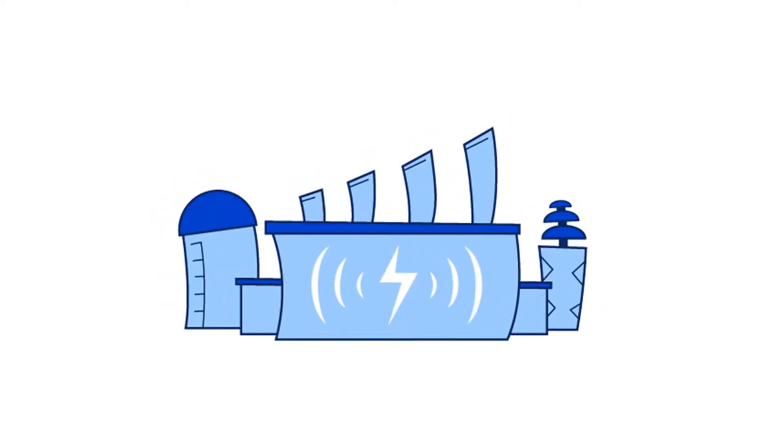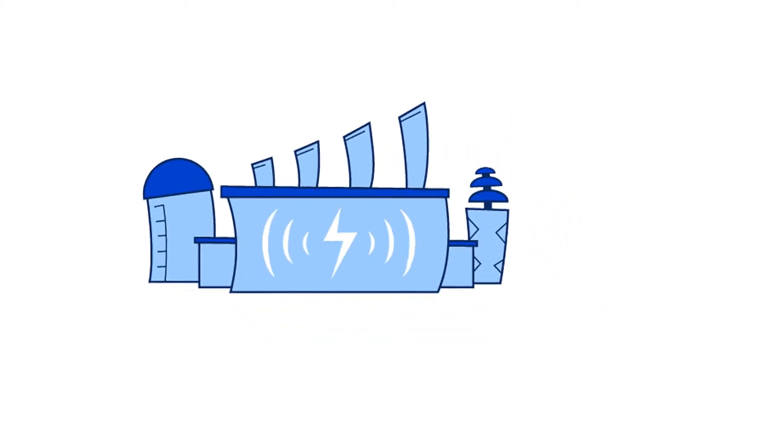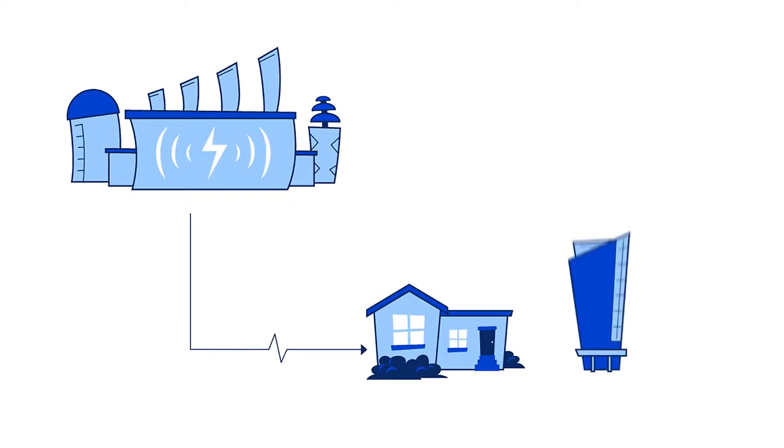Our nation's power grid was originally built to carry electricity in one direction from large central power plants to homes and businesses.